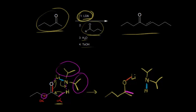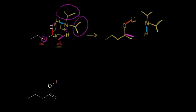Now we've formed our lithium enolate, so let's go to the next step. We're going to add butanal — four carbons with a carbonyl. Aldehydes can function as electrophiles; this carbonyl carbon is partially positive and the oxygen is partially negative. In the second step, we add an electrophilic carbonyl compound where the enolate acts as a nucleophile attacking the electrophile.